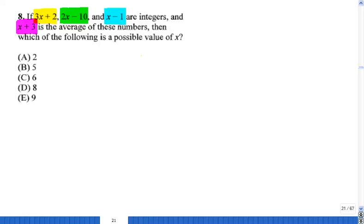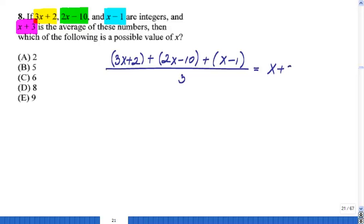So I have to add 3x plus 2. I have to add the second number, 2x minus 10, and I have to add the third number, x minus 1. And to find their average, you have to divide by how many numbers you have, in this case 3. So, we know that gives us x plus 3.